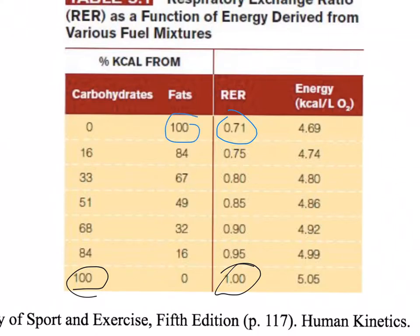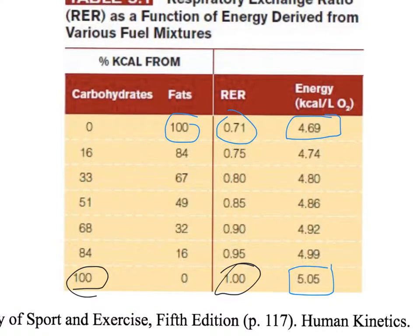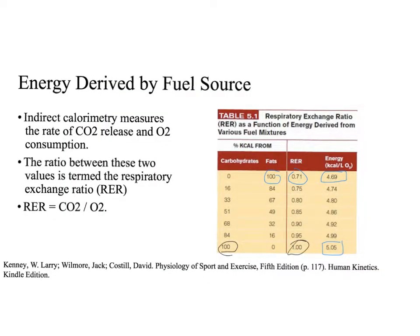At rest, when you break down a fatty acid molecule, the CO2 produced relative to oxygen consumed gives approximately a ratio of 0.7, which predominantly means your energy is coming from fat. It's also important to note that the energy you can generate in kilocalories per liter of oxygen consumed is much smaller from fat than from carbohydrate. This highlights the importance of carbohydrate as a fuel source at higher intensities. We'll directly measure CO2 production and oxygen consumption in the VO2 max lab later in this course.